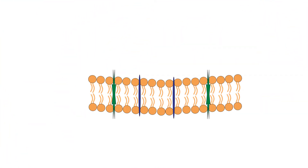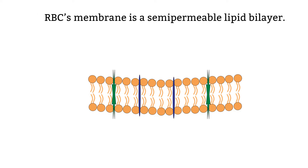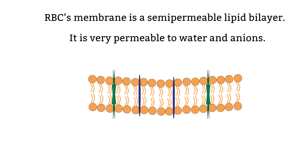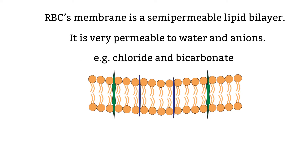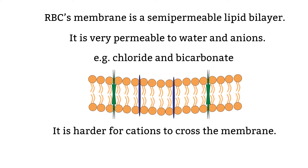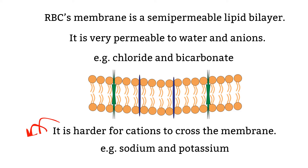Let's look at the red blood cell membrane first. The red blood cell's membrane is a semi-permeable lipid bilayer. It is very permeable to water and anions like chloride and bicarbonate, which travel freely. However, things are different for cations — it is hard for cations like sodium and potassium to cross the membrane.